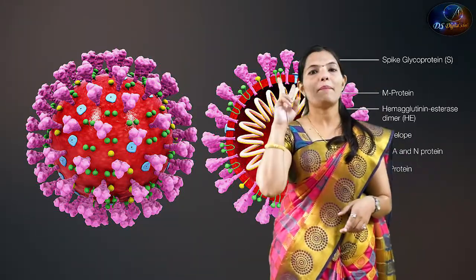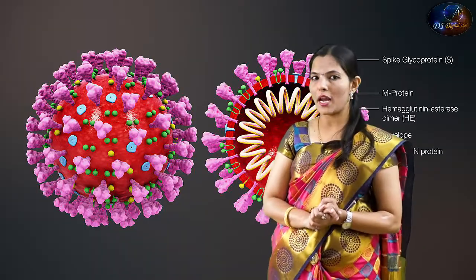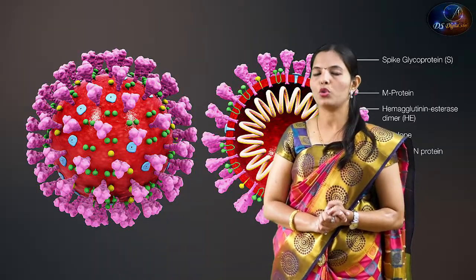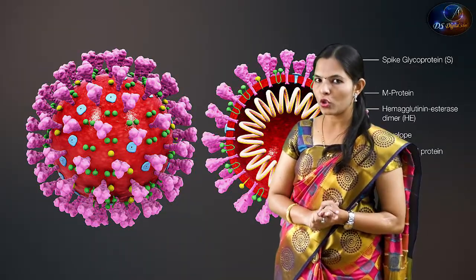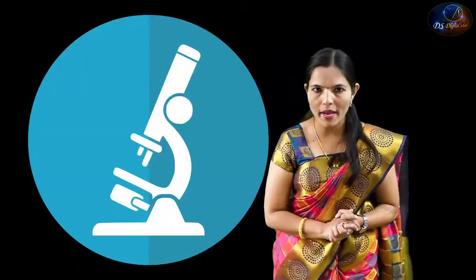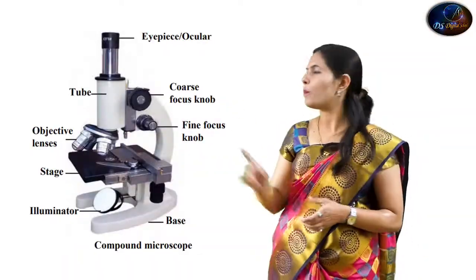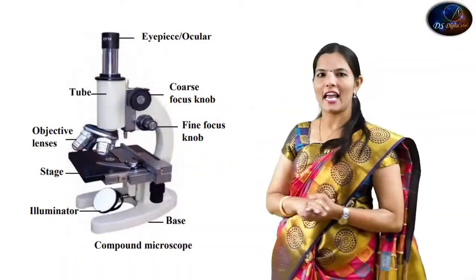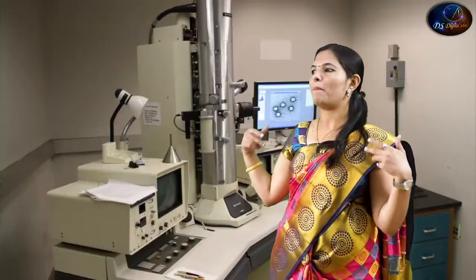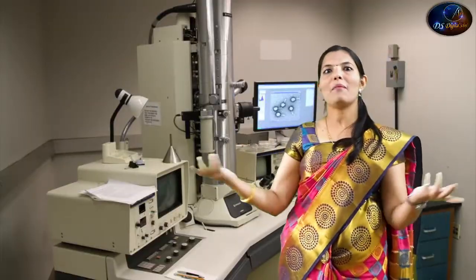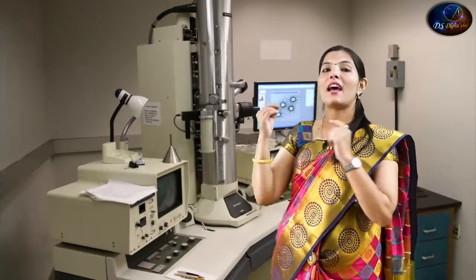There are two types of microscopes: the compound microscope and the electron microscope. You can look up the electron microscope on your computer or Google it to see what it looks like.